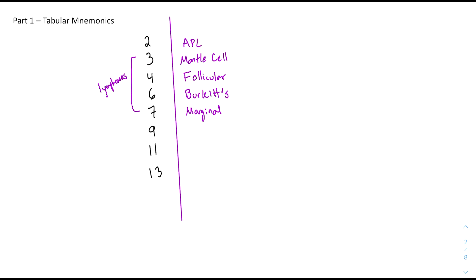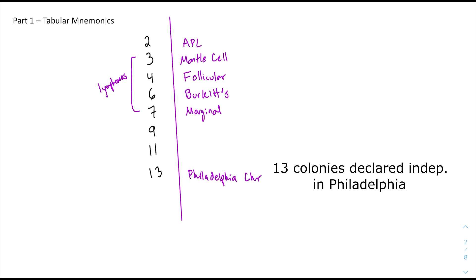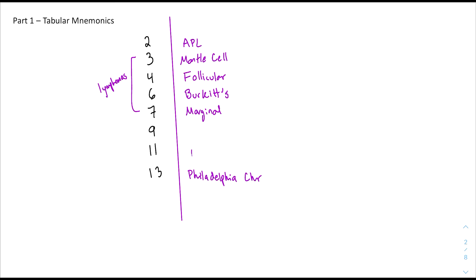For follicular lymphoma, you can think of the word 'fourlicular' to prime that it's associated with four. For 13, it's going to be the Philadelphia chromosome — we can think of the 13 original colonies in the U.S. declaring independence in Philadelphia. For 11, it's going to be for Ewing's sarcoma, and we can think of 'Ew-11,' Ewing's for 11.